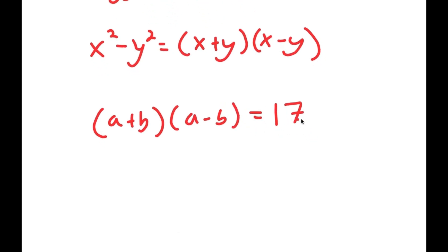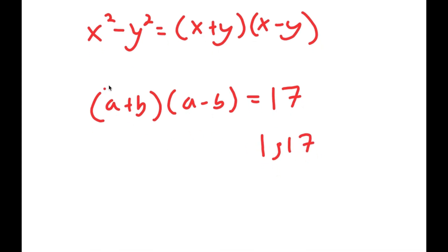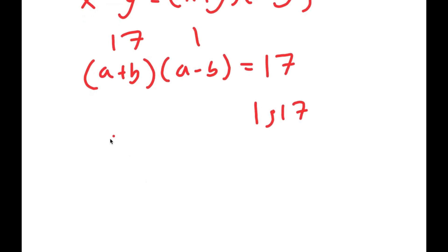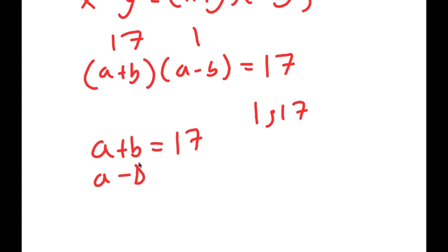Now the only factors of 17 are 1 and 17, meaning one of these two factors has to be 17 and the other has to be 1. Just by looking at this, we can tell that a plus b is going to be 17 and a minus b is going to be 1, because a plus b is greater than a minus b. So I have two equations: a plus b equals 17 and a minus b equals 1.